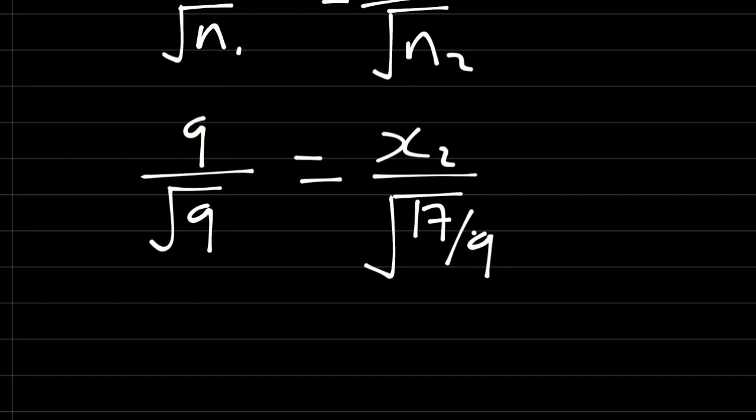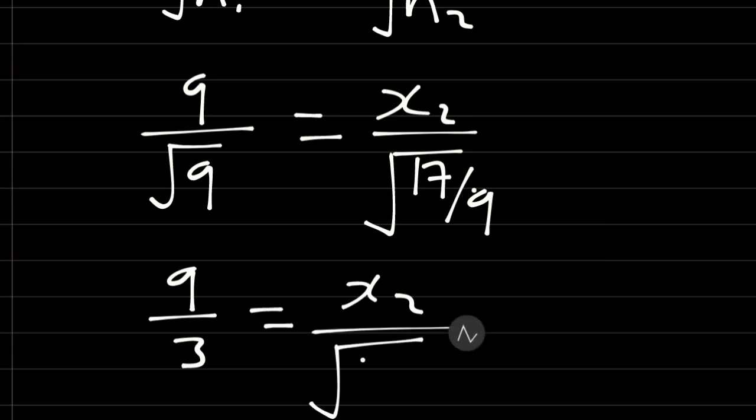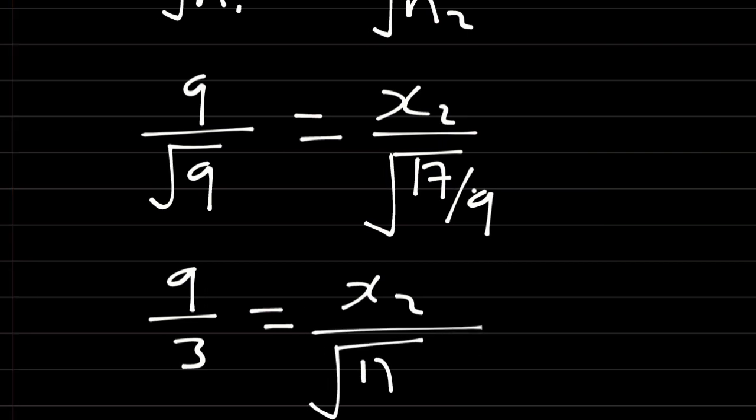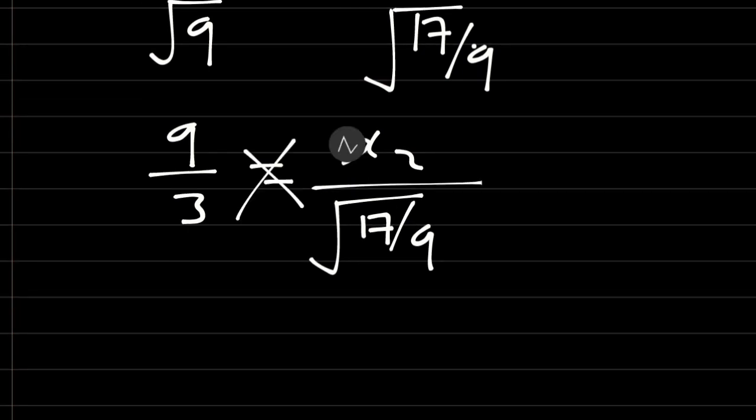At this stage, we have 9 over square root of 9 is actually 3, is equal to x2 over square root of 17 divided by 9. Let's cross-multiply.